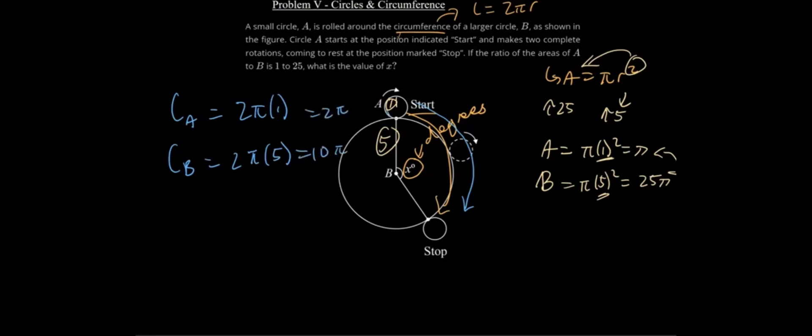But we're going around twice. So it's traveling this distance. It's traveling this distance to get to here, and then it's doing it again. So the total distance traveled is 4π units. We don't really know what these units are. We just know they're units.